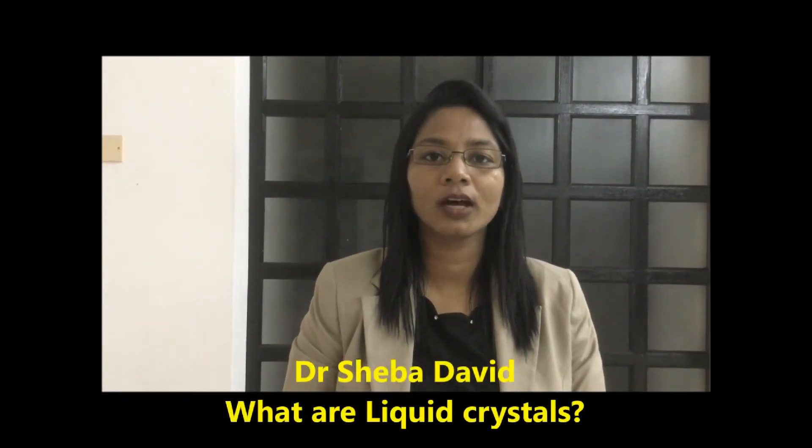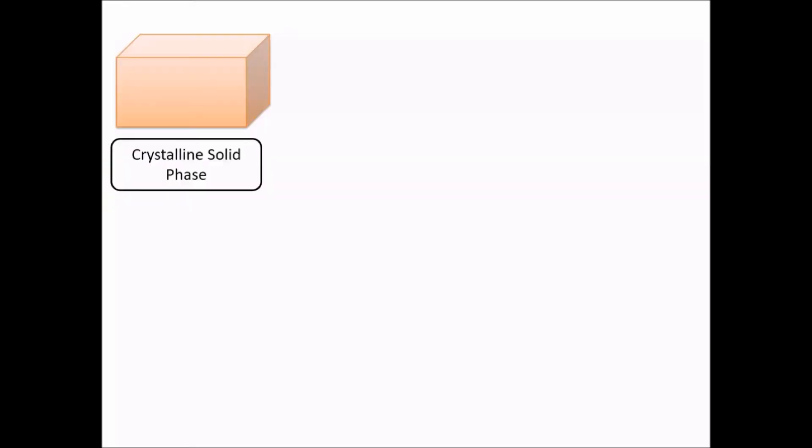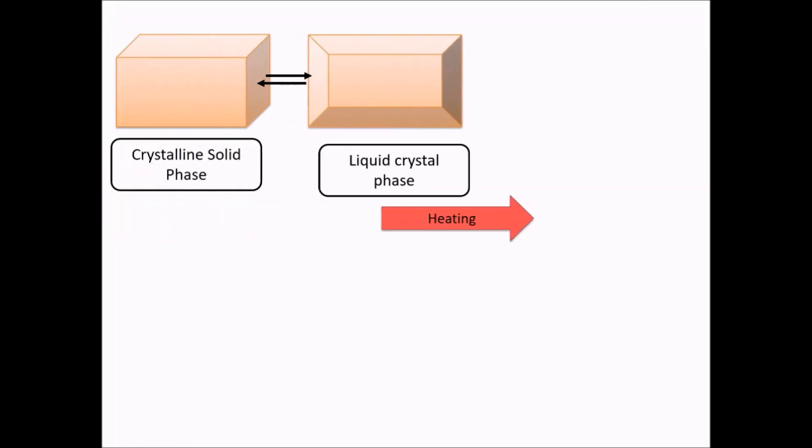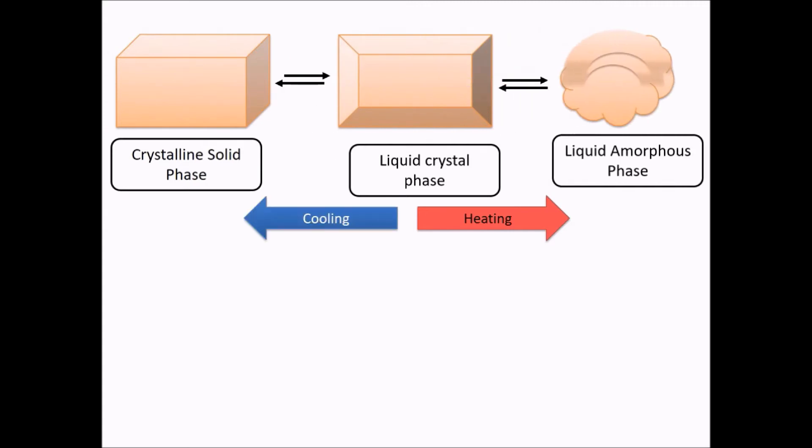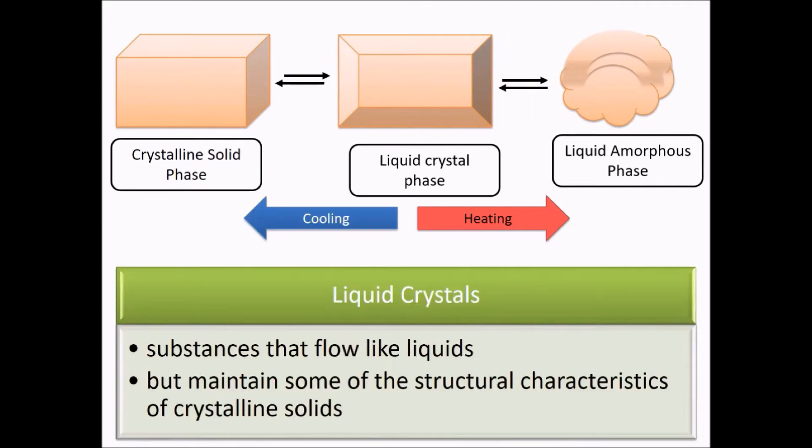First, let's see what are liquid crystals. Crystalline solid phase converts to liquid crystal phase on heating. On further heating, it becomes liquid phase, while on cooling, it's reversed. Therefore, liquid crystals are liquids, but with structural characteristics of solids.